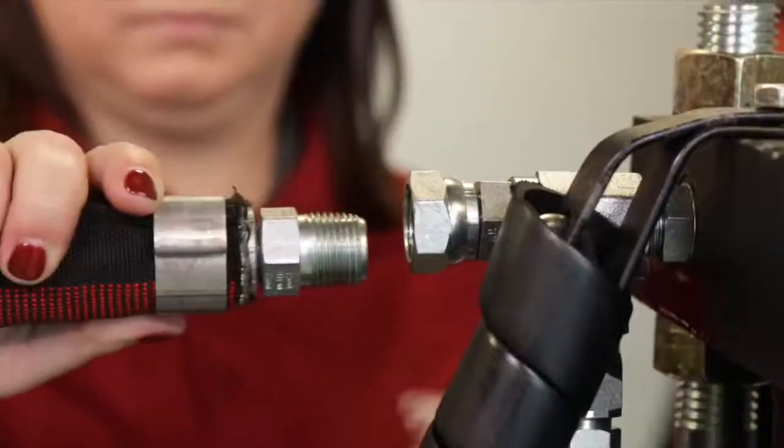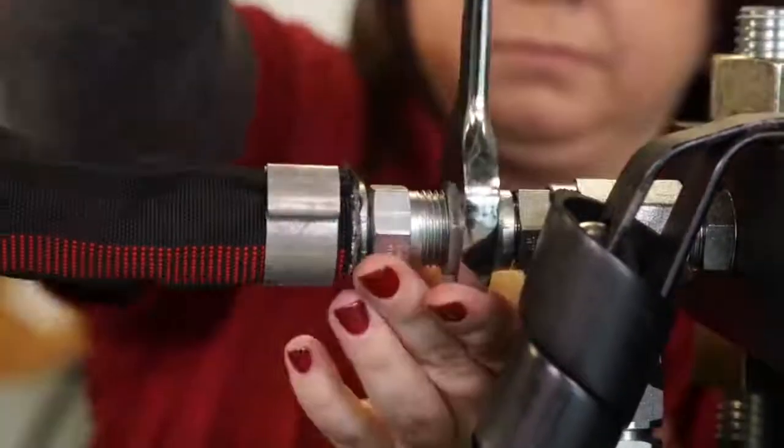Lastly, connect the pressure line to the adapter on the back of the T adapter and tighten.